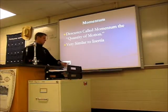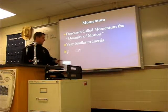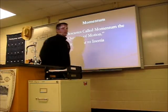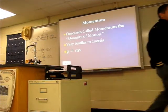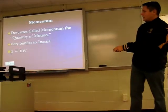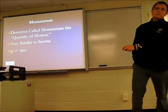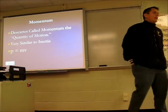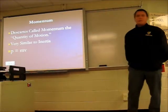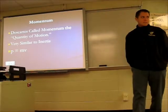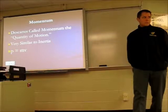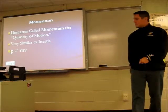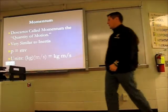The equation for momentum is p equals mv. The letter p stands for momentum, because m is already taken for mass. So p stands for momentum, and momentum equals mass times velocity.